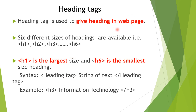The heading tag is used to give headings in a web page. Six different heading tags are available: h1, h2, h3, h4, h5, and h6. H1 is the largest size and h6 is the smallest. The syntax is the heading tag, then the string of text you want as a heading, then the closing heading tag. The heading tag is also a container tag.